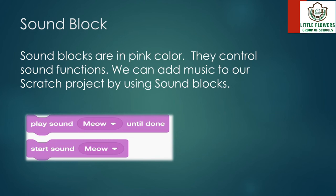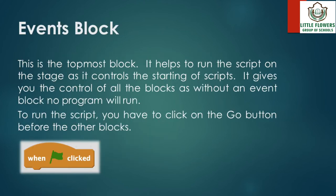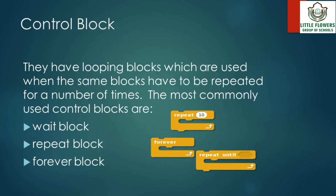Events block: this is the topmost block. It helps to run the script on the stage as it controls the starting of scripts. It gives you control of all the blocks, because without an event block no program will run. To run the script you have to click on the go button before the other blocks.